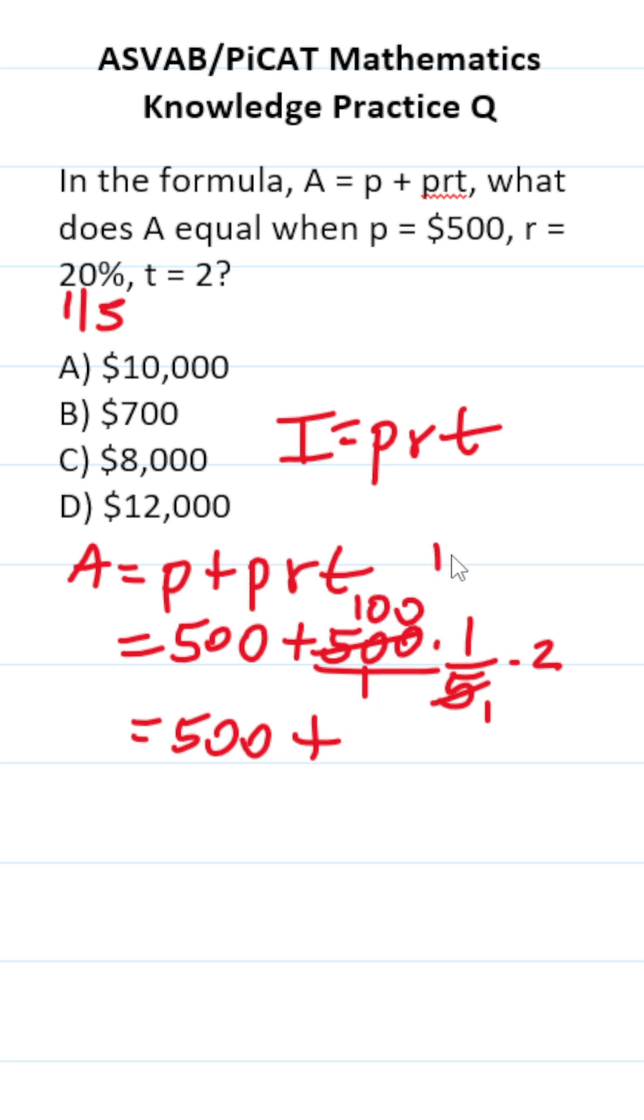This is 100 over 1, which is just 100 times 1 over 1, which is just 1. 100 times 1 is 100 times 2. This becomes 500 plus 200, which is 700, which is answer choice B.